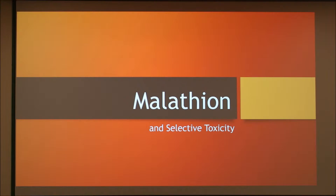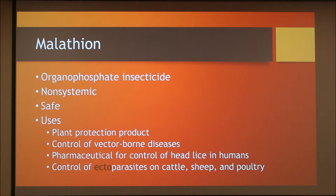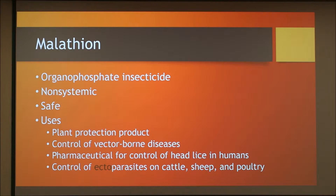Alright, so today I will be discussing malathion and the importance of its selective toxicity. Malathion is an organophosphate insecticide. Organophosphate refers to the type of insecticide and we'll review that mode of action later. Malathion is a non-systemic insecticide, meaning that it does not affect the entire body. Malathion is considered to be one of the safest insecticides available because of its selective toxicity in insects versus mammals.